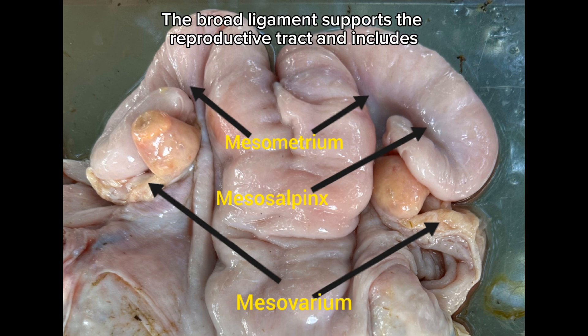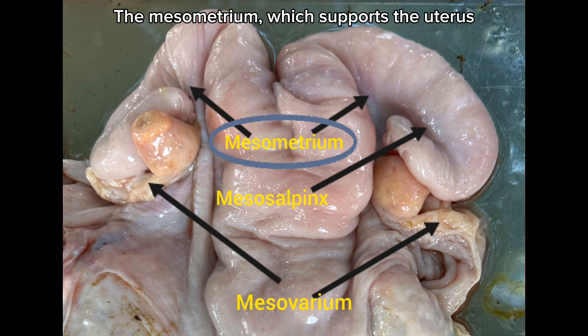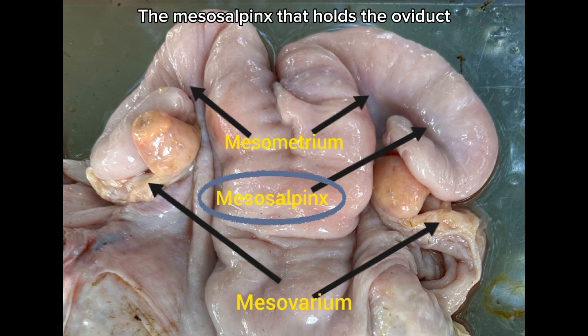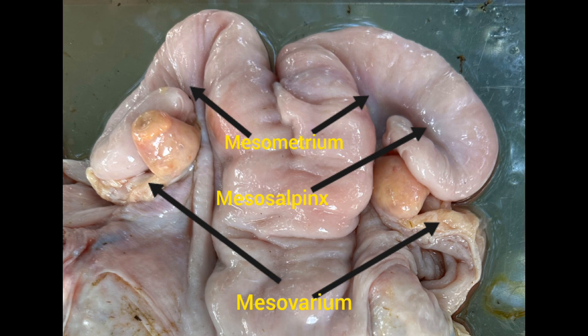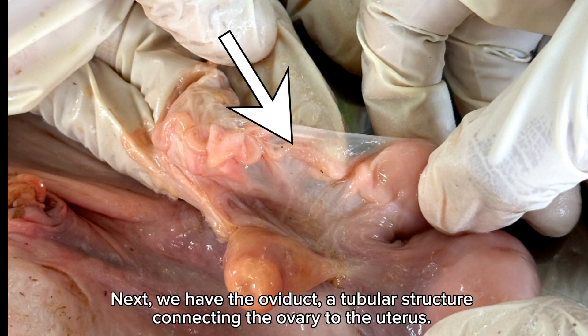Next is the broad ligament. The broad ligament supports the reproductive tract and includes the mesometrium, which supports the uterus; the mesosalpinx, which holds the oviduct; and the mesovarium, which anchors the ovaries.